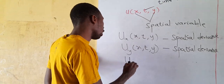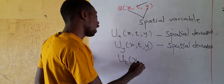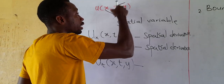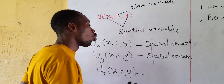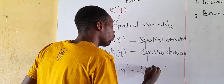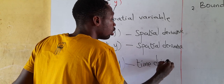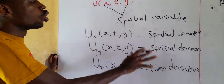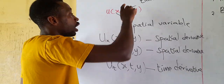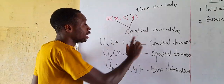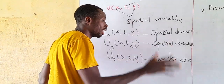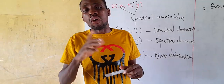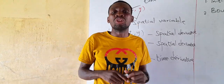Now, if we differentiate with respect to t — the time variable — we call that a time derivative, not a partial derivative. So take notice: differentiation with respect to spatial variables gives a partial derivative, and differentiation with respect to time gives a time derivative. We will be using these terms very often.